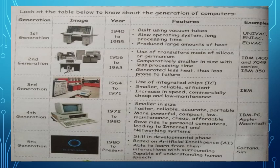3rd Generation Computers, 1964 to 1971: These used integrated chips and were smaller, reliable, and efficient, with increased speed, lower cost, and low maintenance. An example of a 3rd generation computer is the IBM series.